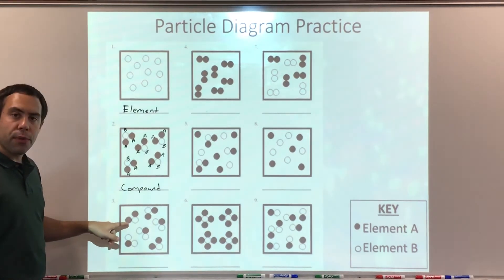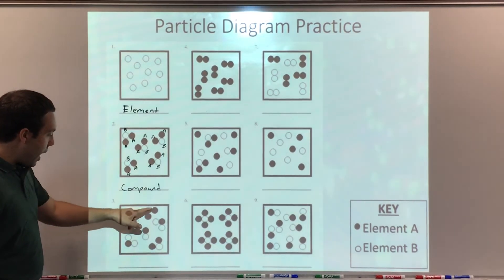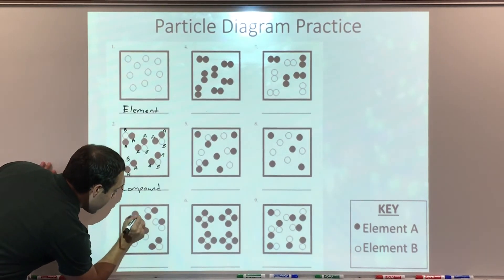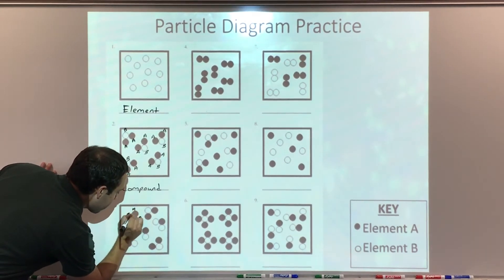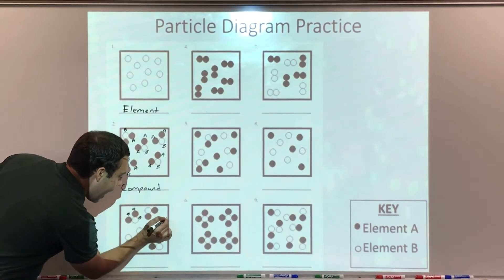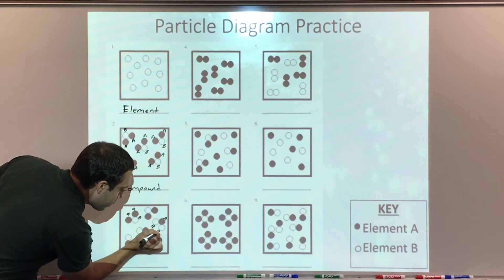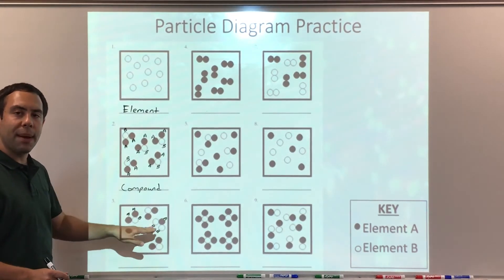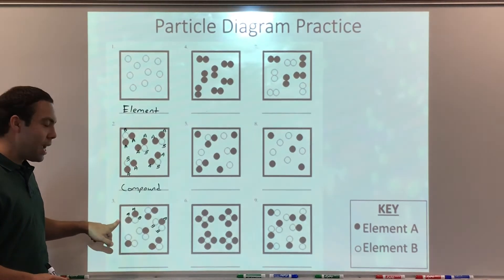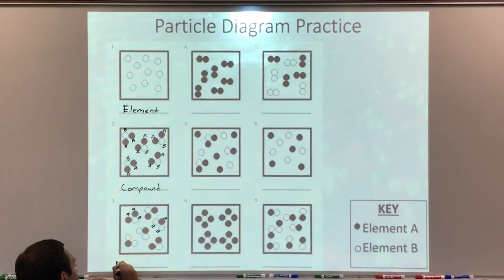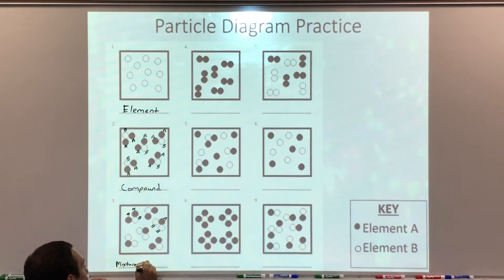For problem number three, I see compounds again. But here we have a B with two A's, and here we have an A with two B's. Since there are two different types of compounds in this particle diagram, we say it is a mixture of compounds.